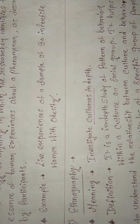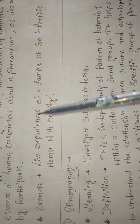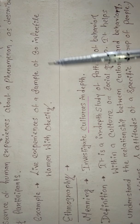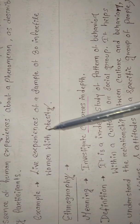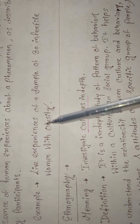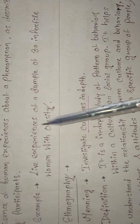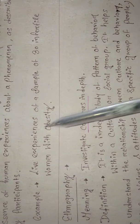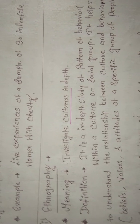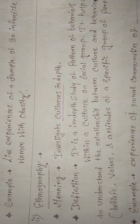An example: 'Life experiences of a sample of 30 infertile women with obesity.' The same group - 30 women, all obese and infertile - and we ask about their life experiences. I hope it's clear. I will continue the rest of the topic in my next video. Thank you.